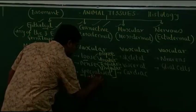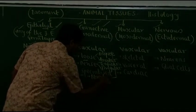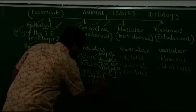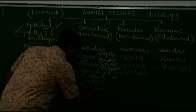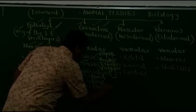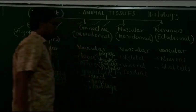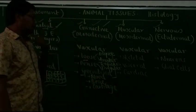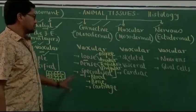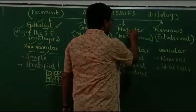For specialized connective tissues, the best examples are blood, bone, and cartilage — these all come under the category of specialized connective tissues.